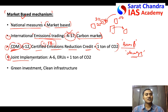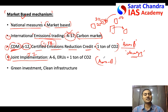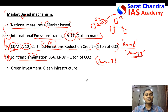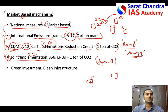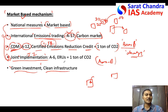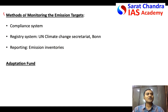The third market-based mechanism is joint implementation, where one Annex B country collaborates with another Annex B country to jointly implement a project that reduces emissions. The broad concept across all three mechanisms is that if a country cannot reduce emissions domestically, it can reduce them elsewhere — because greenhouse gas effects are global. This is why many countries started making green investments and building clean infrastructure in other countries.